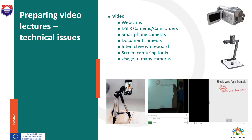Many of today's smartphones have video cameras providing quality that until recently could only be achieved with expensive professional video cameras. For a more professional look, it is recommended to use additional accessories such as smartphone tripods, which are inexpensive and give videos a cleaner look, and smartphone mount lenses that help capture narrow shots and wide-angle views. Smartphone cameras are also a good solution for educators who make videos out in the field.